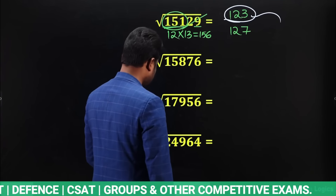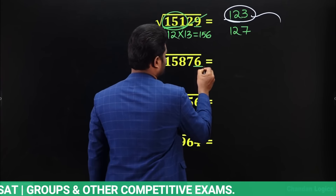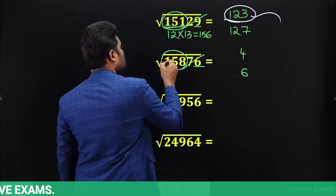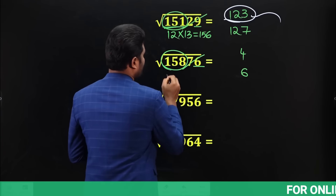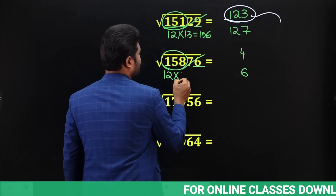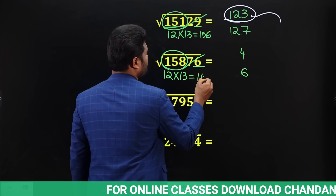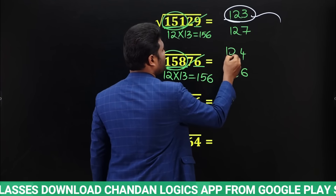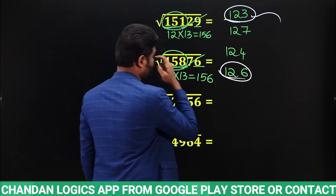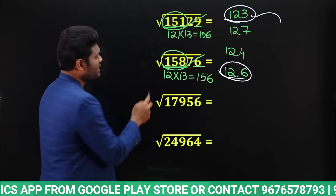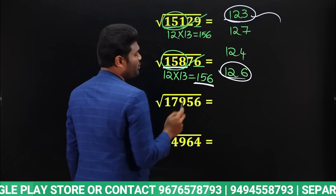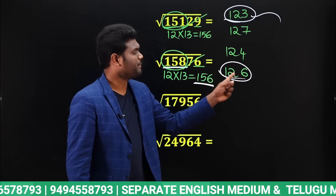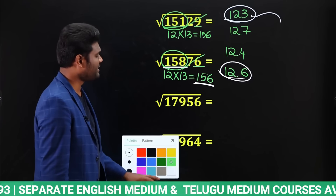For √15876: last digit is 6, possibilities are 4 or 6. Strike off last two digits — remaining is 158. Perfect square close to 158 and less than 158 is 12² = 144, giving 124 or 126. Multiply 12×13 = 156. Compare: 158 is bigger than 156, so answer is the bigger value — 126. So √15876 = 126.